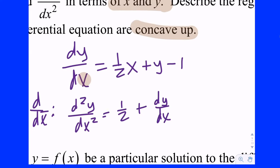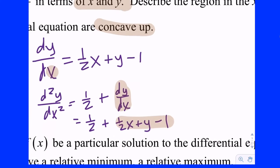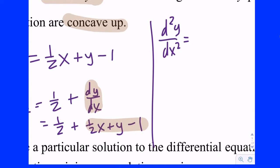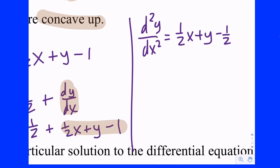So d²y/dx² equals one-half plus dy/dx. That's not yet in terms of x and y, so substitute dy/dx from the line above: d²y/dx² equals one-half plus (one-half x plus y minus one). You could stop there, or continue simplifying: one-half x plus y, and one-half minus one gives negative one-half. So d²y/dx² equals one-half x plus y minus one-half. You don't get bonus points for combining constants, but it helps for the next part.